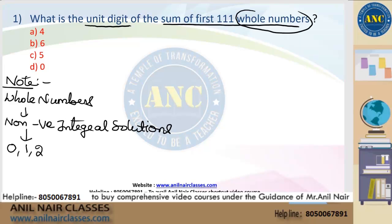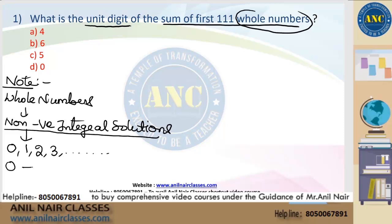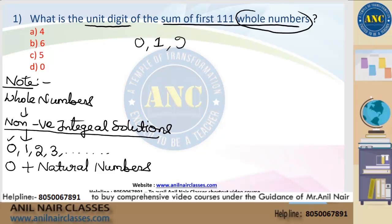Whole numbers start from 0 onwards: 0, 1, 2, 3, and so on. Please don't shout out the answer — just listen. The first whole number is 0, the second is 1, the third is 2, and so on. Therefore, the 111th whole number is 110. Don't make that mistake — the question says whole numbers, not natural numbers.